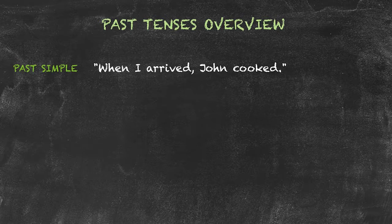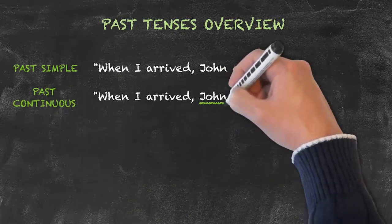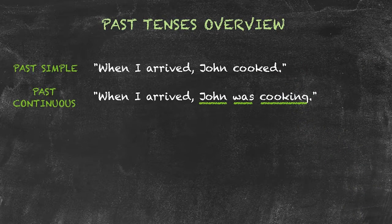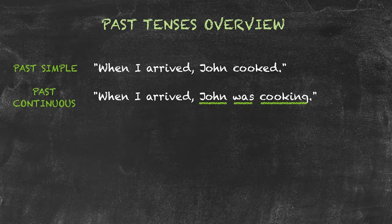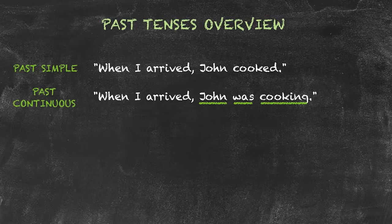The second example sentence, when I arrived, John was cooking. John was cooking is in the past continuous tense. Here, the structure is subject, John, the verb to be in the past tense, which is was or were, plus the verb with an ing at the end. The past continuous tense is used to describe an action that was in progress at a specific past time. Here in the example sentence, the cooking was in progress at the time I arrived. This differs from the first example sentence, where I arrived first and then John cooked. In this example, the cooking had already started and was still in progress at the time I arrived.